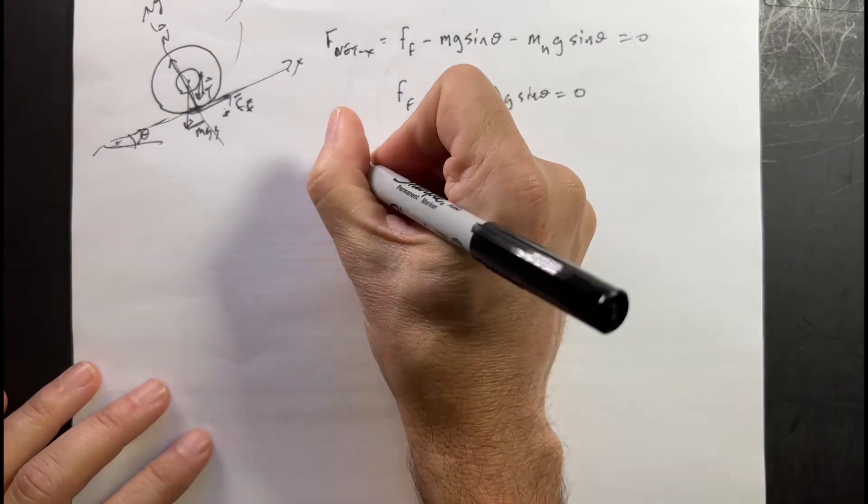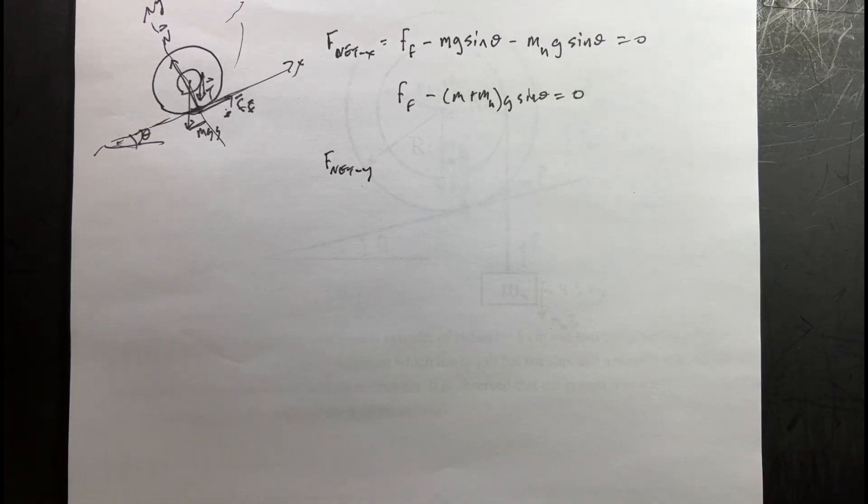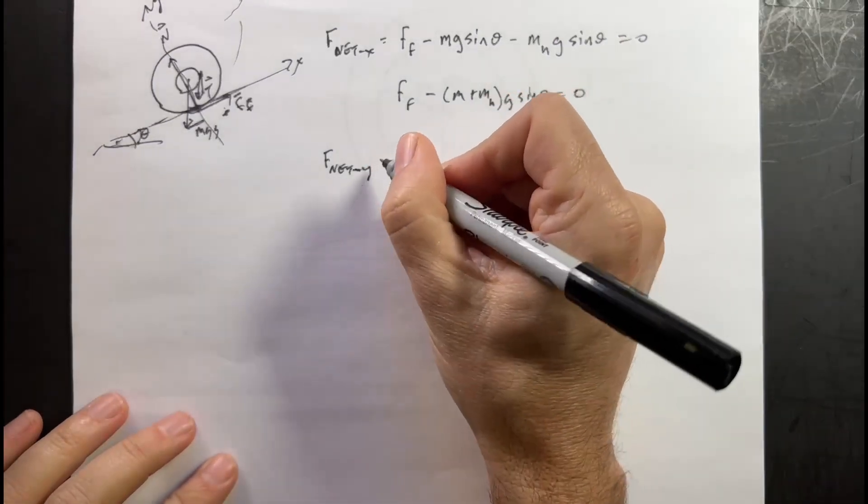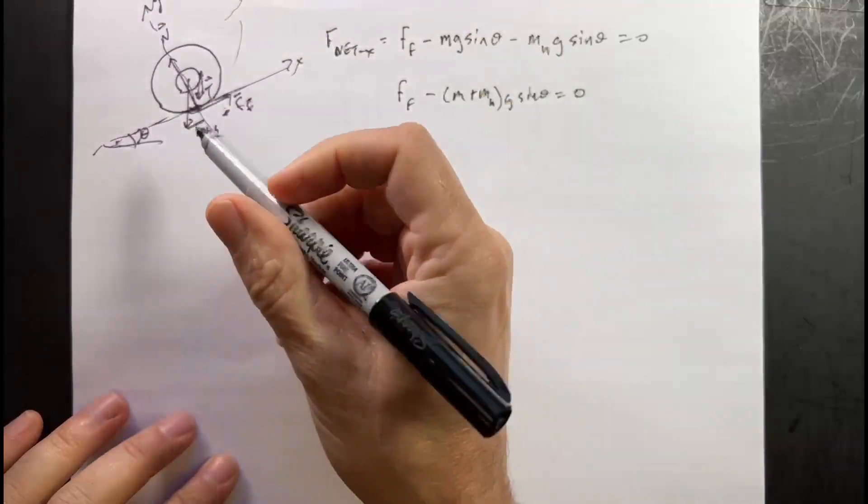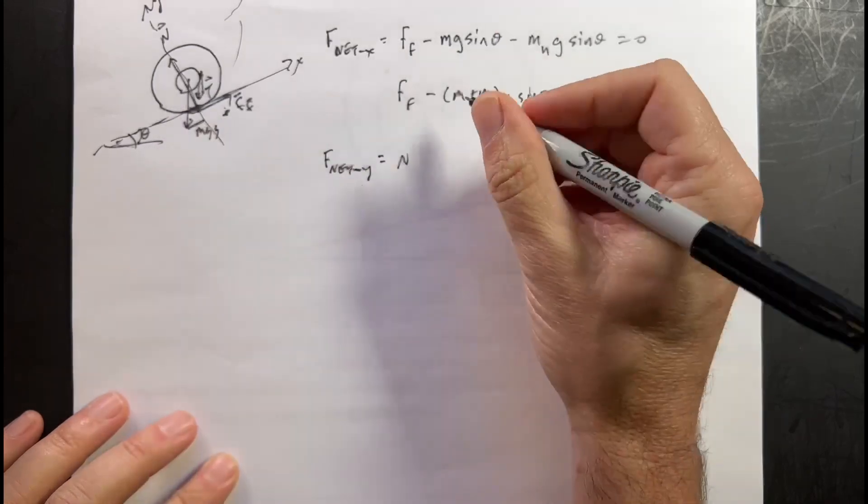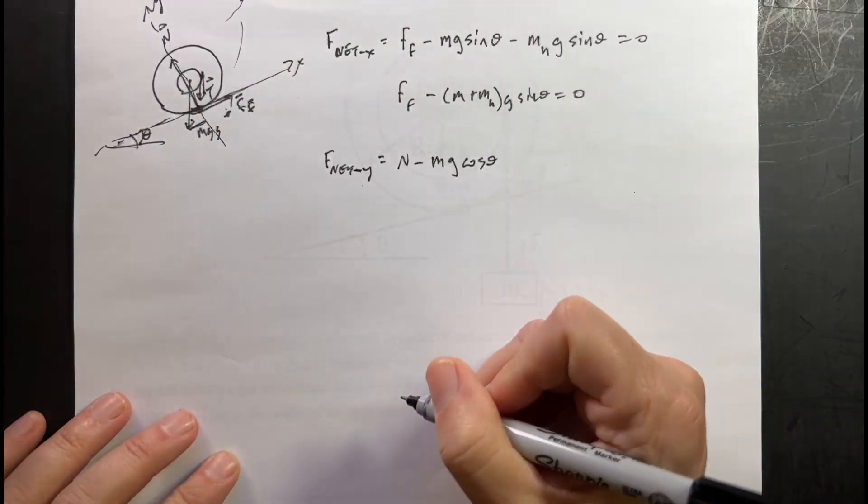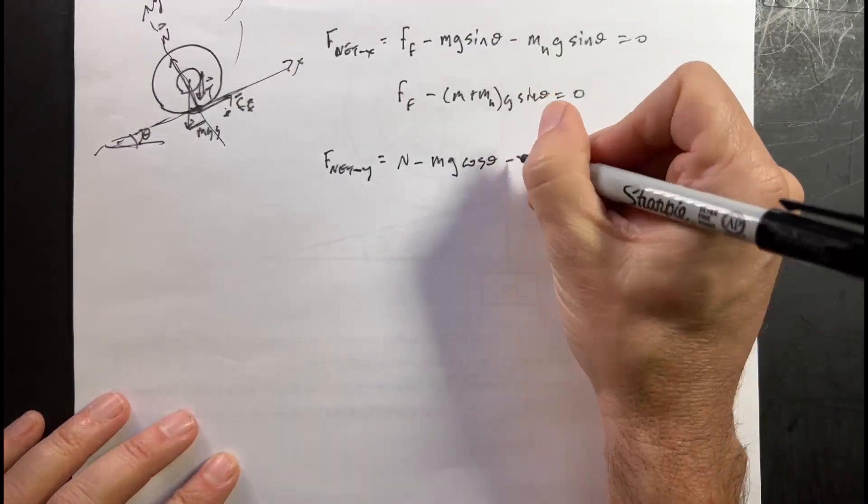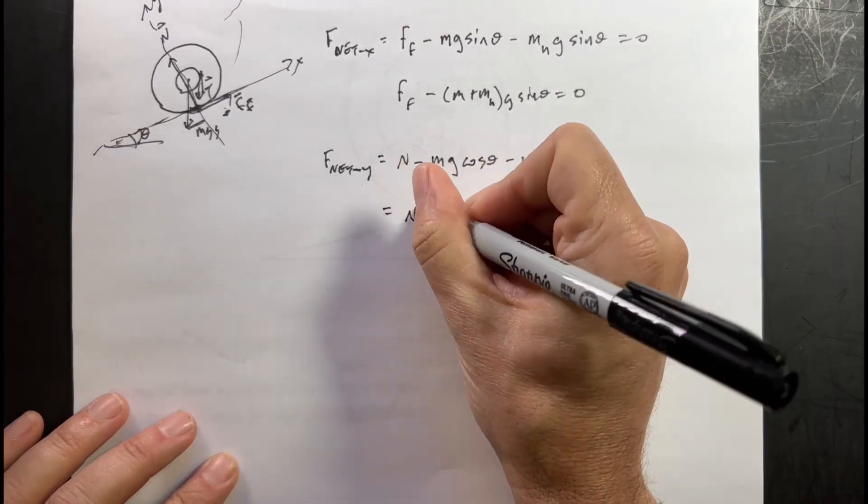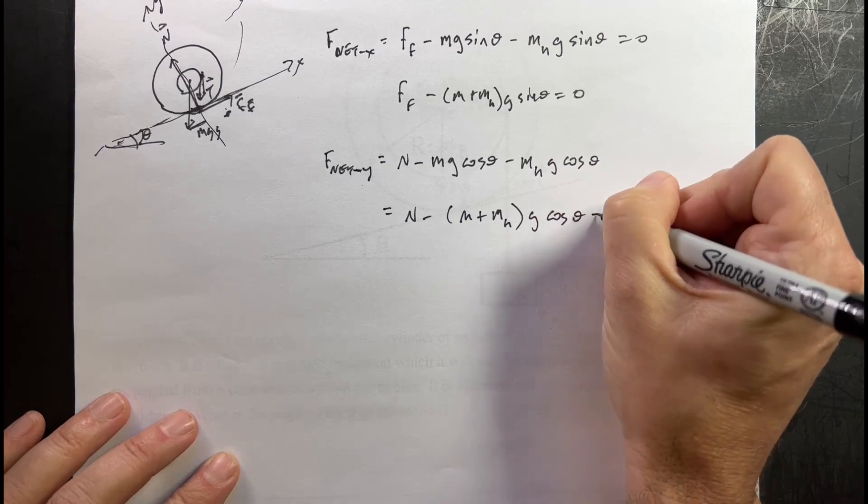Now the y direction. F net y. And you'll notice here I don't know how to find theta. The goal is to find theta. I'm just writing some equations and hopefully I'll get to the point where I can find theta. So in the y direction this way, I have the normal force and then I have a component of the weight of the bobbin, that's going to be minus mg cosine theta, and then a component of the tension which is going to be minus mhg cosine theta. So this becomes n minus (m plus mh)g cosine theta equals zero.